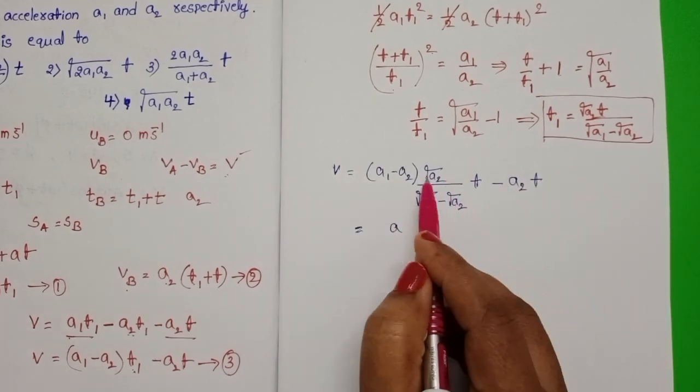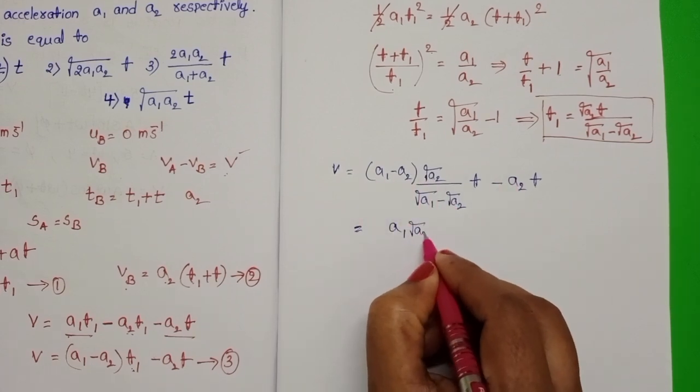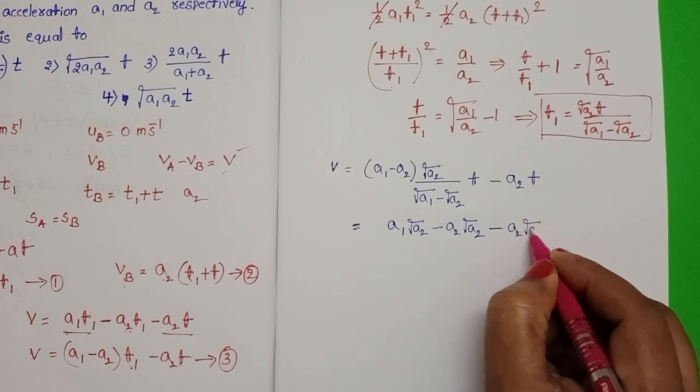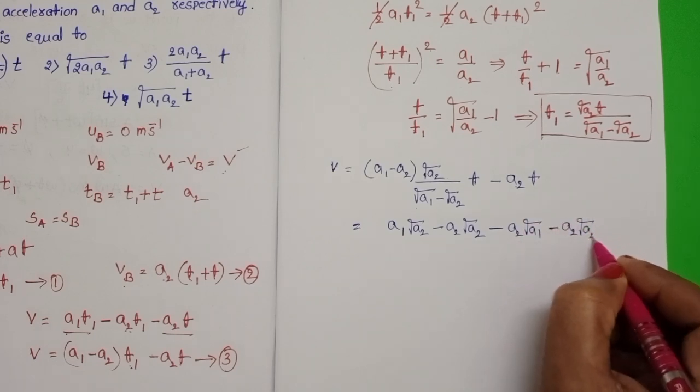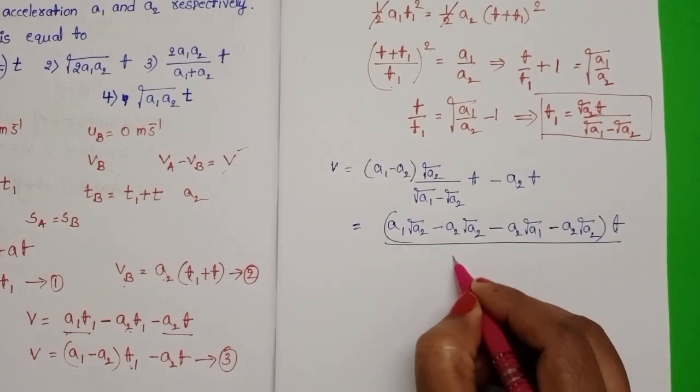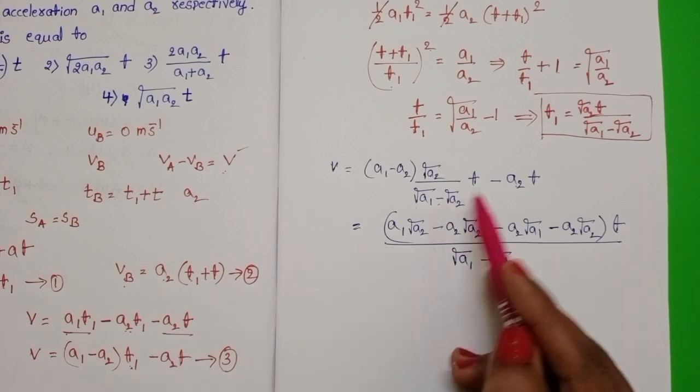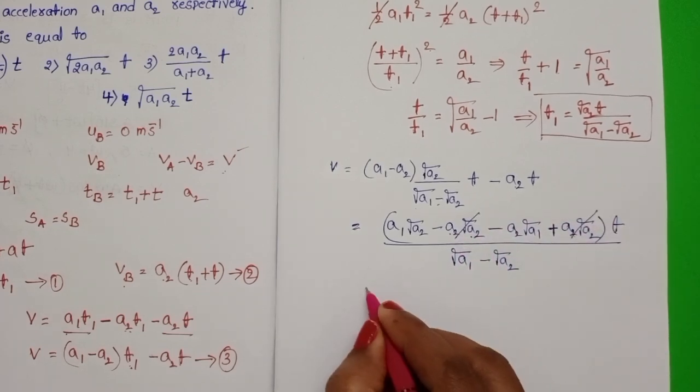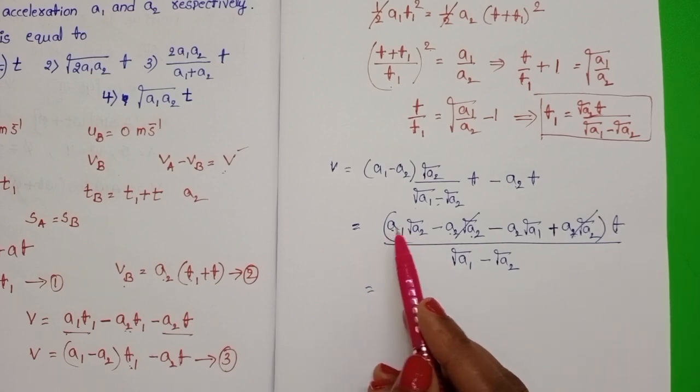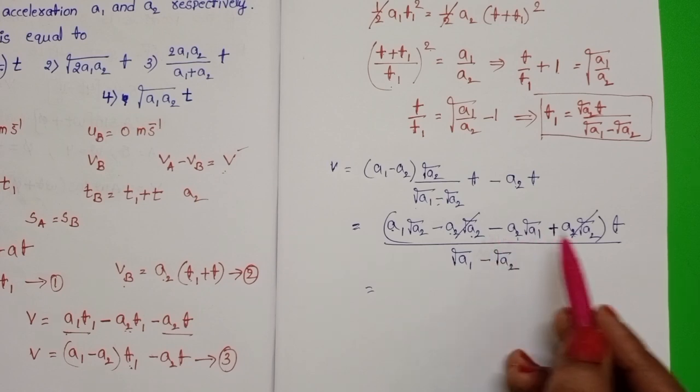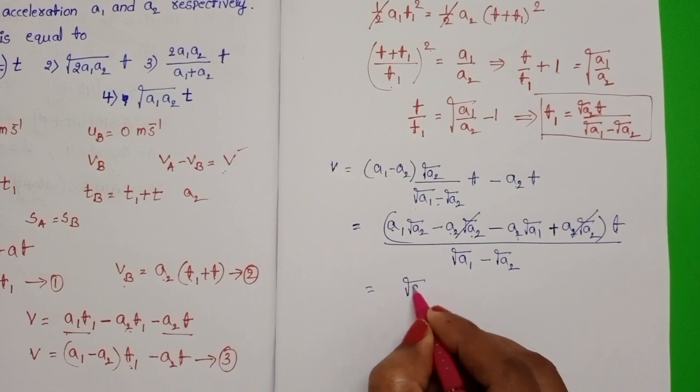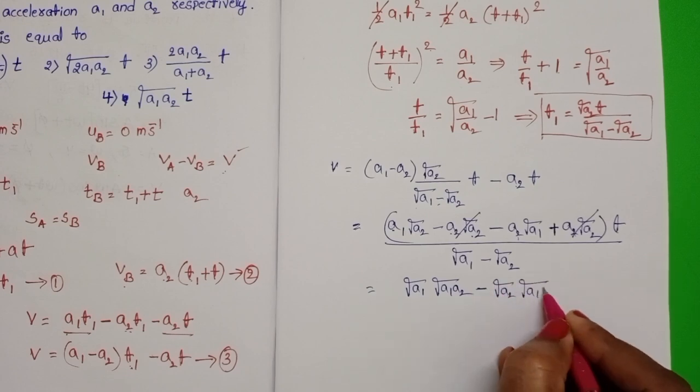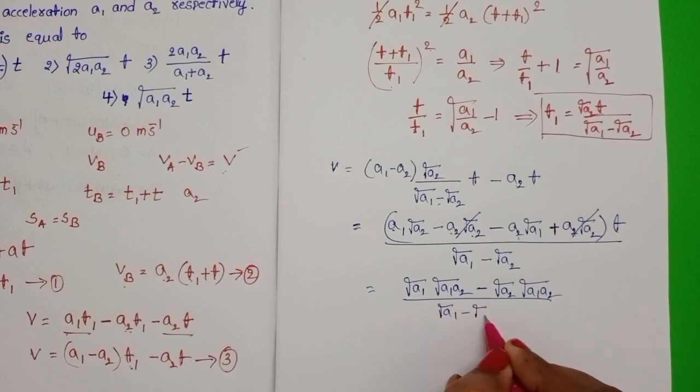Take T common and multiply with root A2. A1 root A2 minus A2 into root A2 into T by square root of A1 minus square root of A2. Here, minus of minus becomes plus. Minus A2 root A2 plus A2 root A2 get cancelled. And in place of A1 write root A1 into root A1 and here also root A2 into root A2. So, now take root A1 into square root of A1 A2 minus root A1 minus root A2.